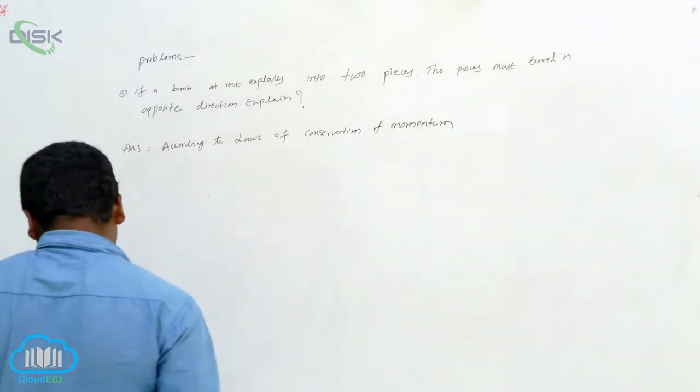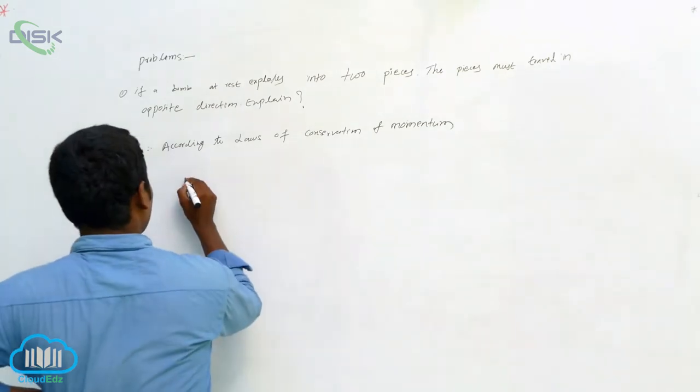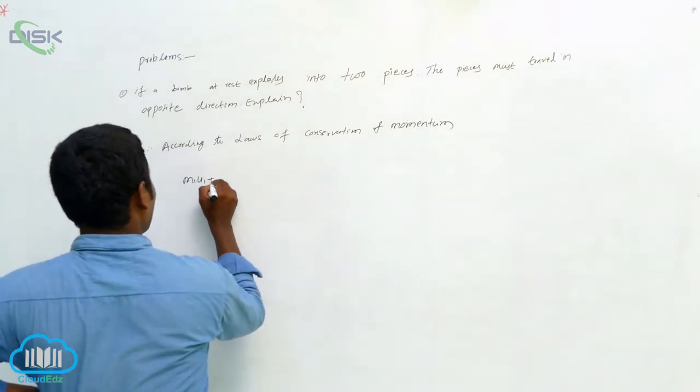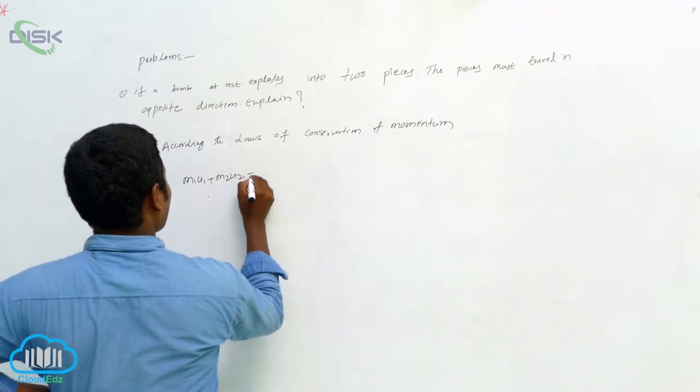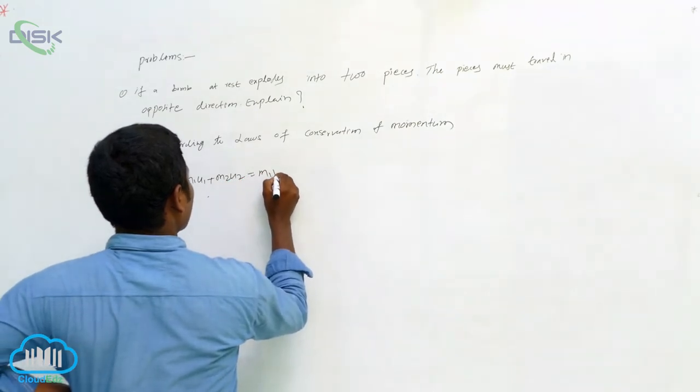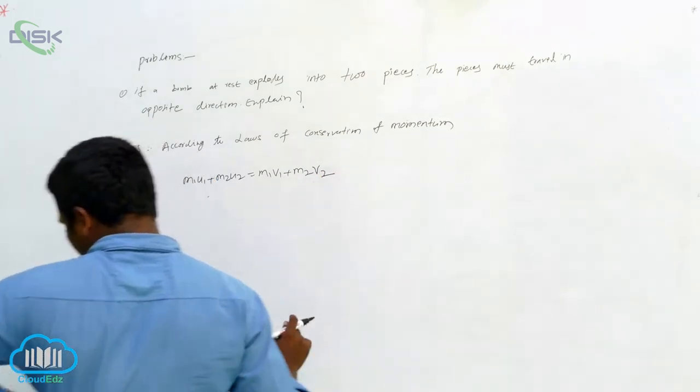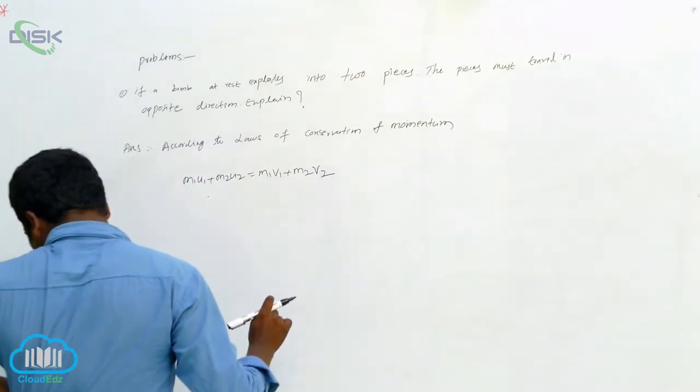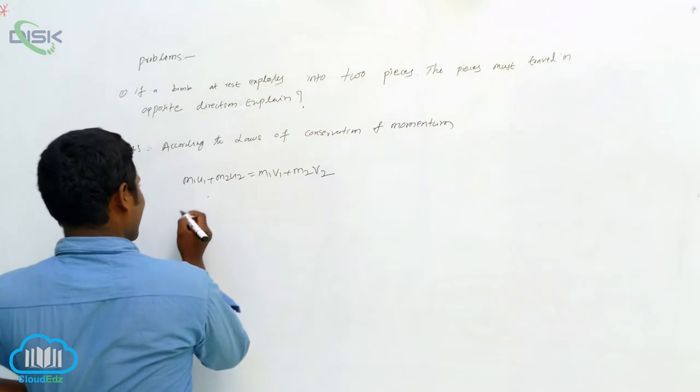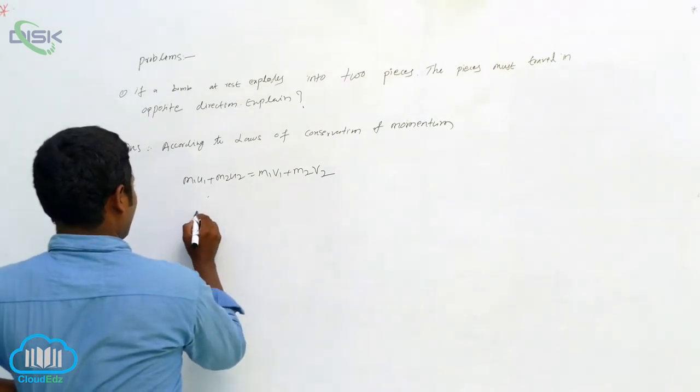What is the law of conservation of momentum? M1U1 plus M2U2 is equal to M1V1 plus M2V2. Next, what happened? Initially the bomb was at rest.